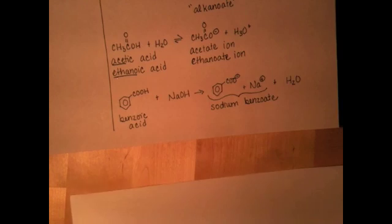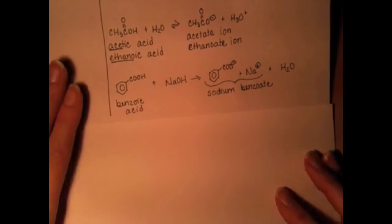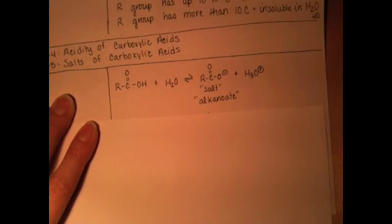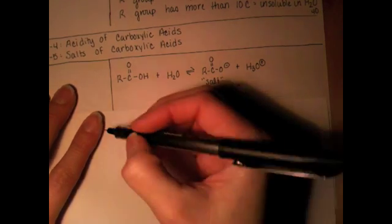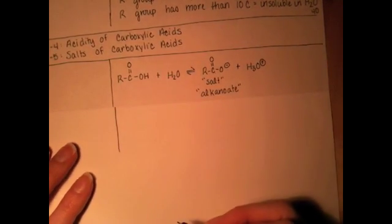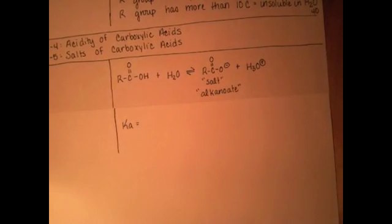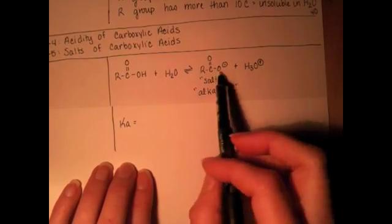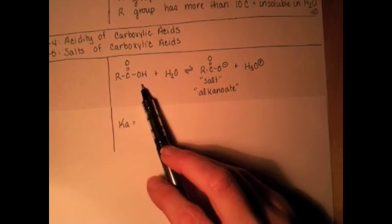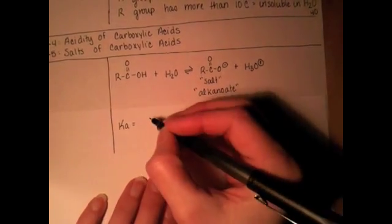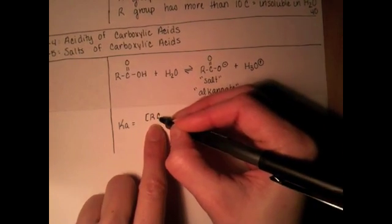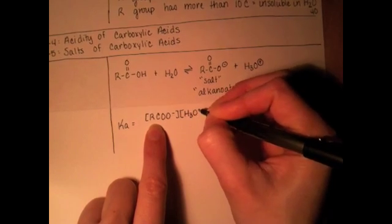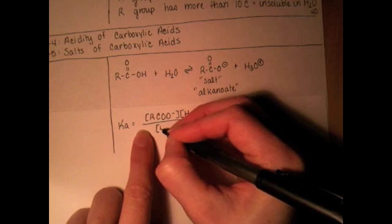Because carboxylic acids are all weak acids, we can write an equilibrium expression for them. Going back to the generic equation, we're going to write an equilibrium expression Ka applicable for any carboxylic acid. Remember from Gen Chem, the equilibrium expressions are products over reactants raised to their stoichiometric coefficients — which is always one in these simple carboxylic acids, not dioic acids — leaving out pure liquids such as water. So Ka equals the concentration of the alkanoate ion times the concentration of the hydronium ion divided by the concentration of the carboxylic acid.